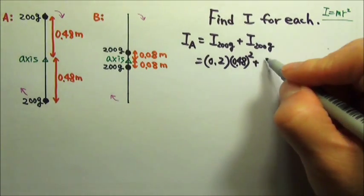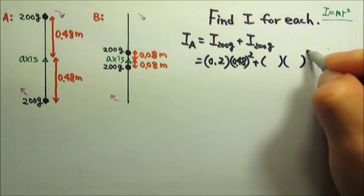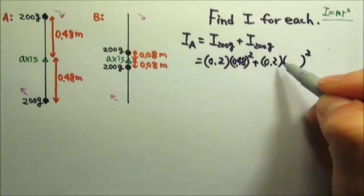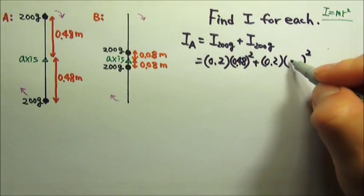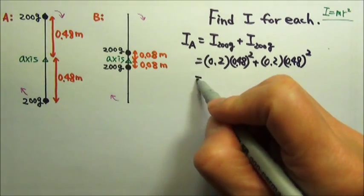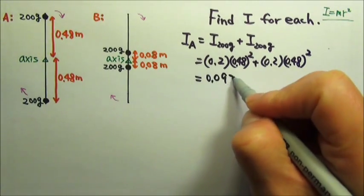And then for the other one, it's also mr squared. The mass is also 0.2 kilograms. The r is 0.48 meters. And this gives us 0.0922.